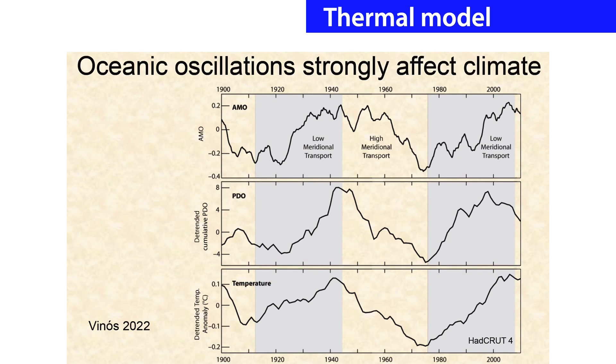This is an important slide from Javier Vinos. It shows de-trended data, which is just the relative ups and downs. At the top is the Atlantic multidecadal oscillation, a 65-year cycle that's going to turn negative in just a few years. In the middle is the Pacific decadal oscillation, which has a very strong correlation to temperature. This tells us that ocean oscillations play a very important role in our climate system.